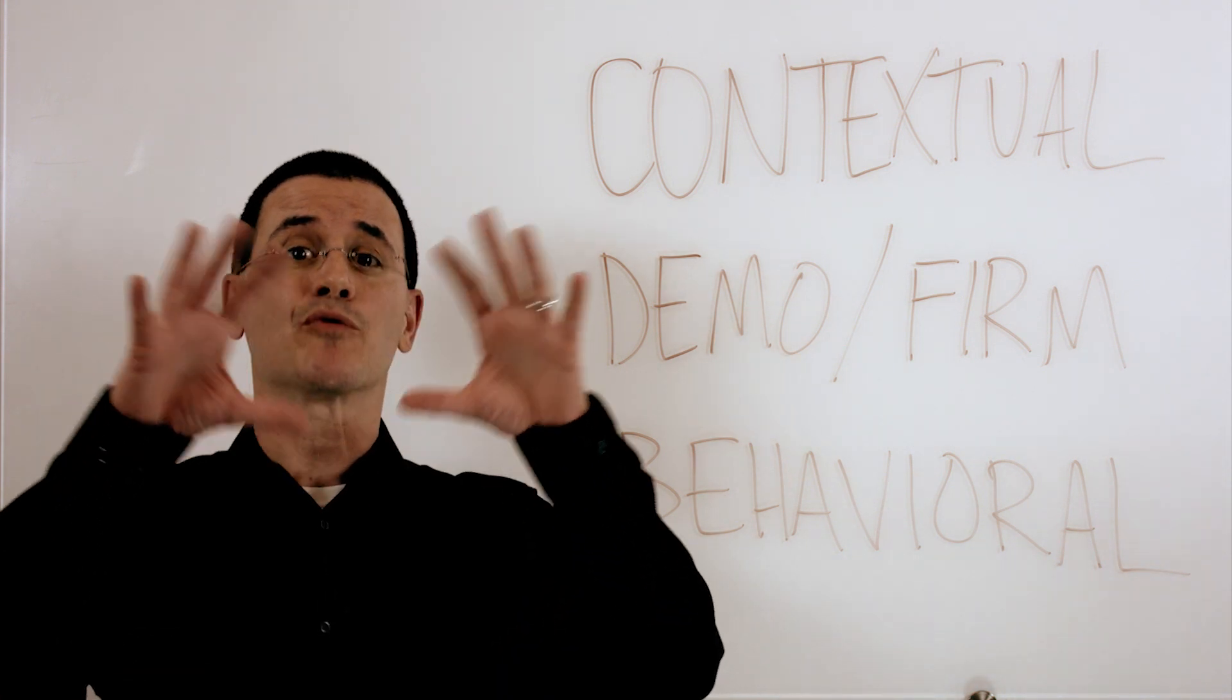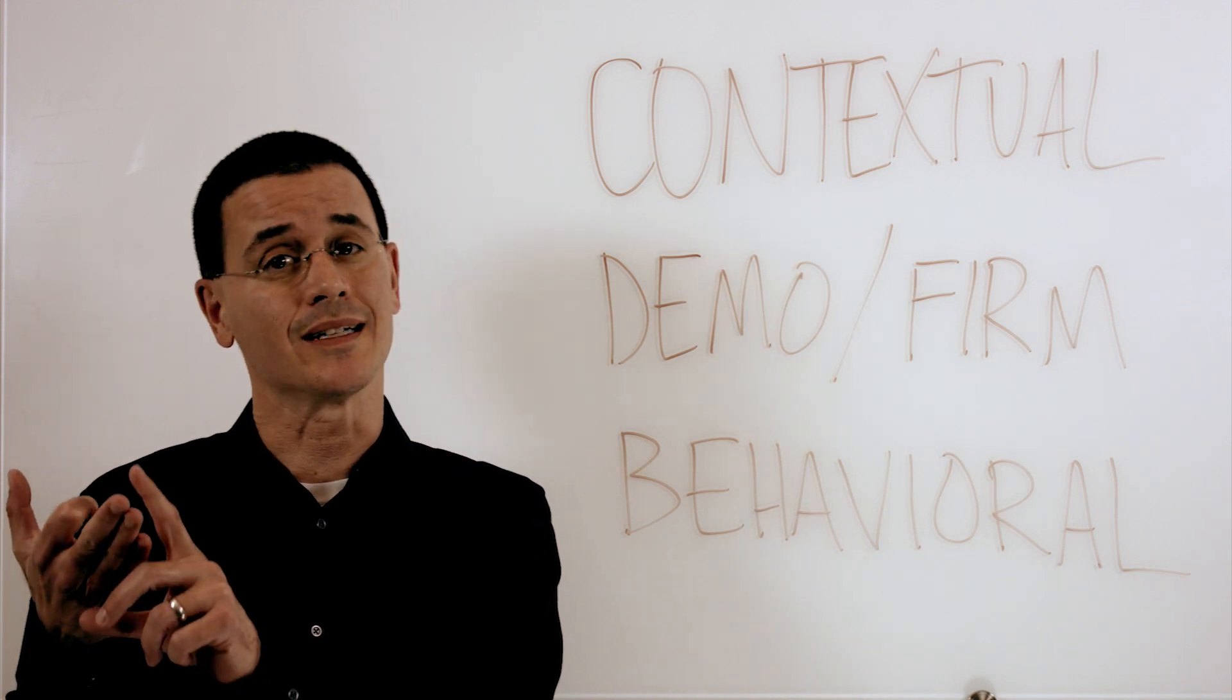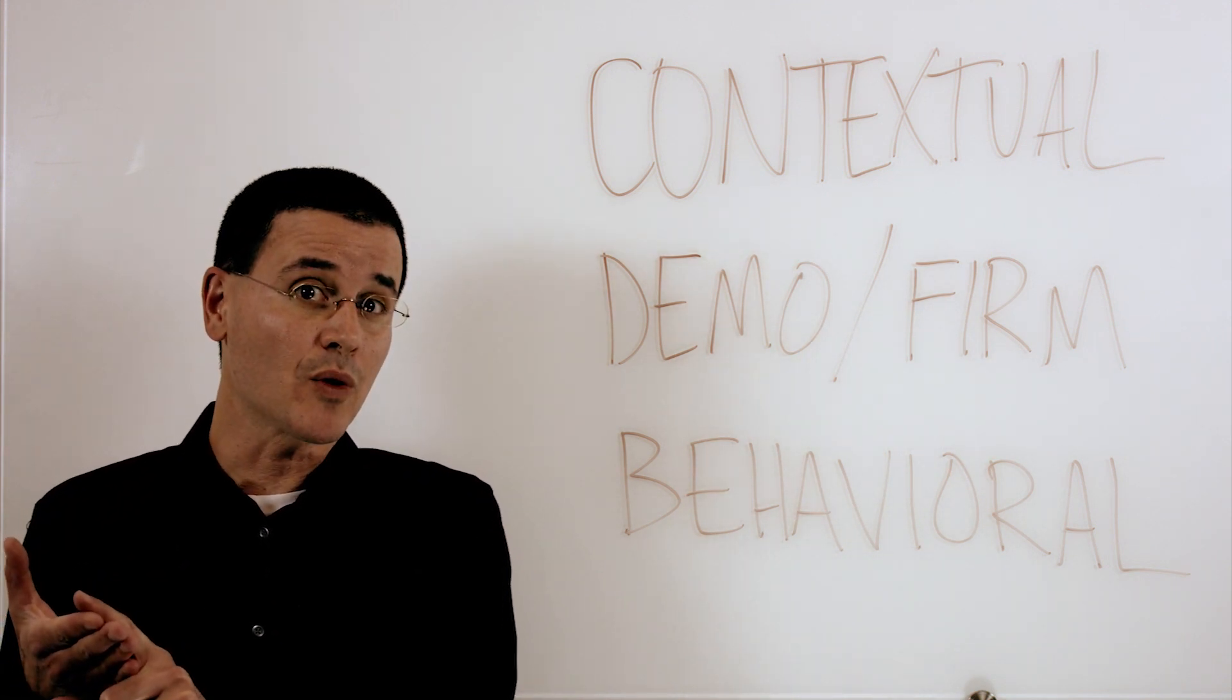Contextual data tells you everything around the visitor that's coming to your site. Where are they? What time of day, day of week? What kind of device they're on? Where were they before they visited your website?